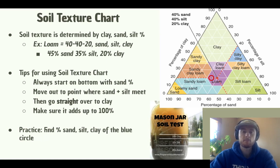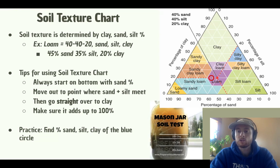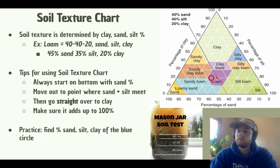Here are some tips for how you can use a soil texture chart. The first tip is that we always start on the bottom with the percentage of sand. Then we move out diagonally to the point where the sand and the silt meet — in this example, from 40% sand to where it meets with 40% silt. Then we go straight over to determine the percentage of clay, which is 20%. You don't want to go from 40% sand straight over to silt, because 40 plus 80 is 120 — we can't have 120% of anything in a soil. The last rule: make sure it adds up to 100. If it doesn't, you didn't do it right.